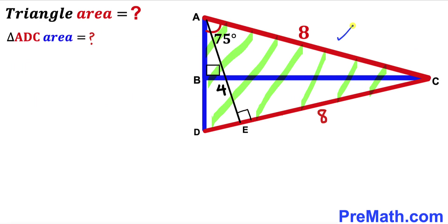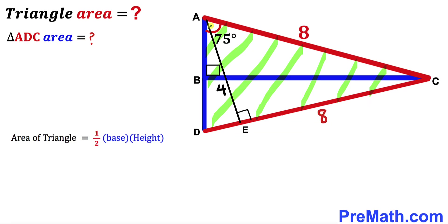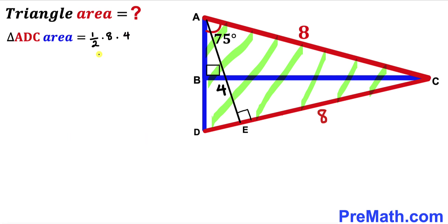Now let's focus on big triangle ADC and calculate its area. The area of a triangle is always equal to one-half times base times height. In our case, the base of triangle ADC is side CD which is 8 units, and the height is AE which is 4 units. So the area of triangle ADC is one-half times 8 times 4, which gives us 16 square units.